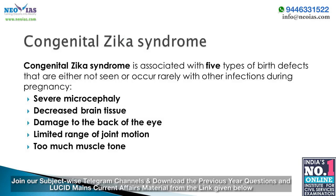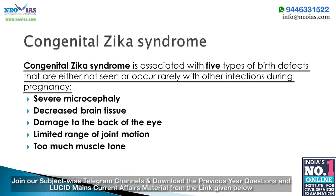Congenital Zika syndrome is associated with five types of birth defects not seen or occurring rarely with other infections during pregnancy. These are: first, severe microcephaly — a small head size resulting in a partially collapsed skull; second, decreased brain tissue with brain damage as indicated by a specific pattern of calcium deposits; third, damage to the back of the eye with a specific pattern of scarring and increased pigment; fourth, limited range of joint motion such as club foot; and fifth, too much muscle tone restricting body movement soon after birth.